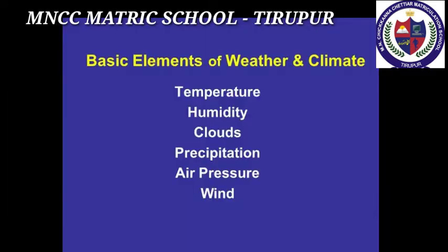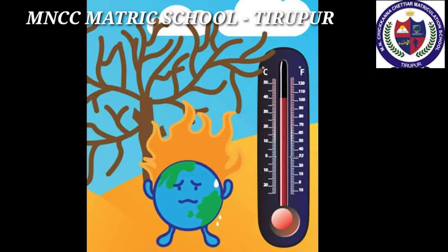Elements of weather and climate: temperature, rainfall, pressure, humidity and wind are the major elements of weather and climate. The earth and its atmosphere get heated from the sun through insolation. The degree of heat present in the air is termed as temperature.